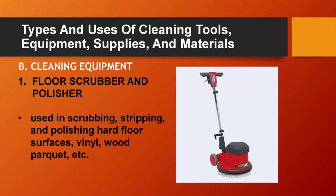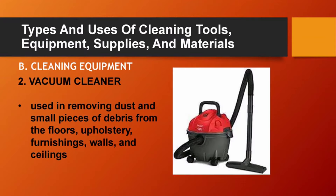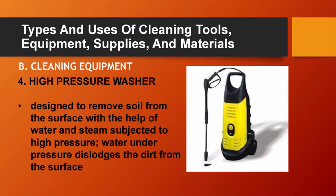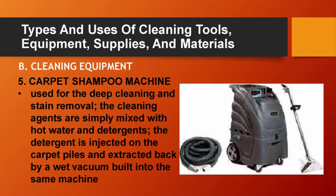Cleaning equipment: Floor scrubber and polisher, used in scrubbing, stripping, and polishing hard floor surfaces like vinyl, wood, parquet, etc. Vacuum cleaner, used in removing dust and small pieces of debris from floors, upholstery, furnishings, walls, and ceilings. Upholstery steam cleaner, used to clean the carpet and upholstery. High pressure washer, designed to remove soil from the surface with the help of water and steam subjected to high pressure; water under pressure dislodges the dirt from surfaces. Carpet shampoo machine, used for deep cleaning and stain removal; the cleaning agents are mixed with hot water and detergent.